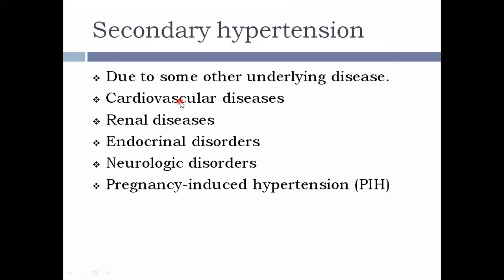Secondary hypertension is due to an underlying disease. Cardiovascular causes include arteriosclerosis and coarctation of the aorta. Renal causes include stenosis of the renal artery, glomerulonephritis, or a tumor of the juxtaglomerular cells — these cells secrete renin, which increases blood pressure. When there is a tumor of the juxtaglomerular cells, renin secretion is increased, ultimately leading to increased blood pressure.